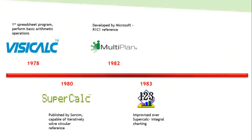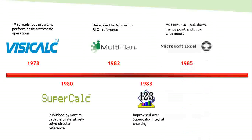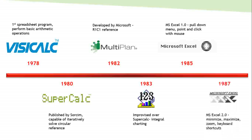Then in 1985, Microsoft developed Excel and it had pull-down menus and several click functions with the mouse. In 1987, version 2 of Excel came up which had minimize, maximize, zoom functions and certain keyboard shortcuts.